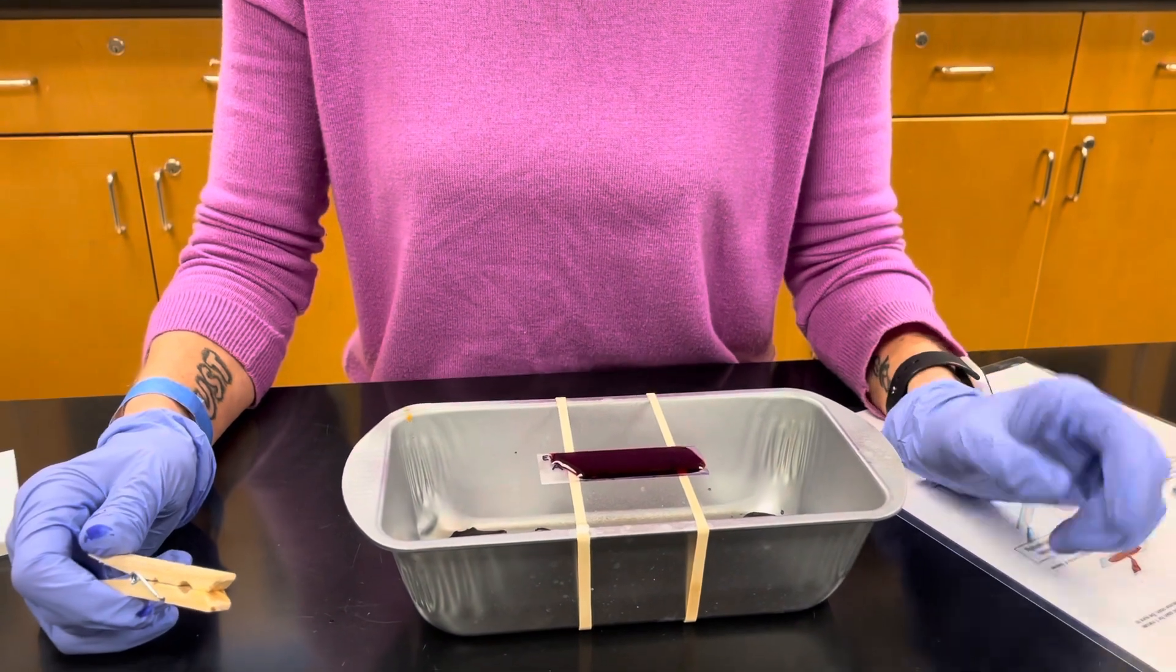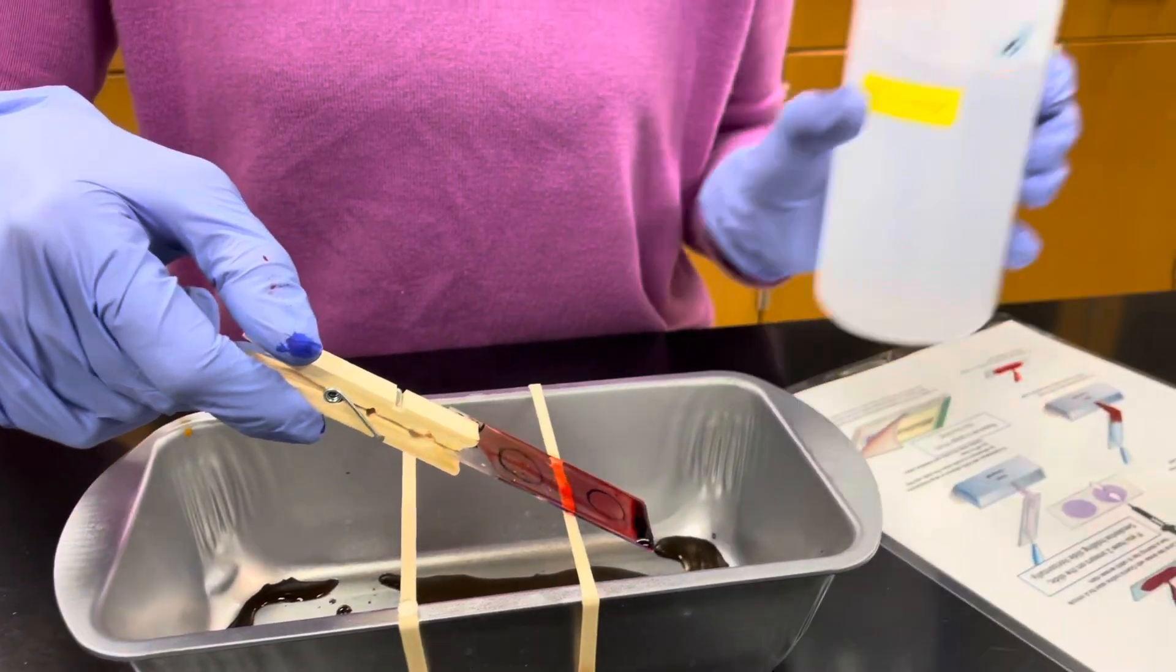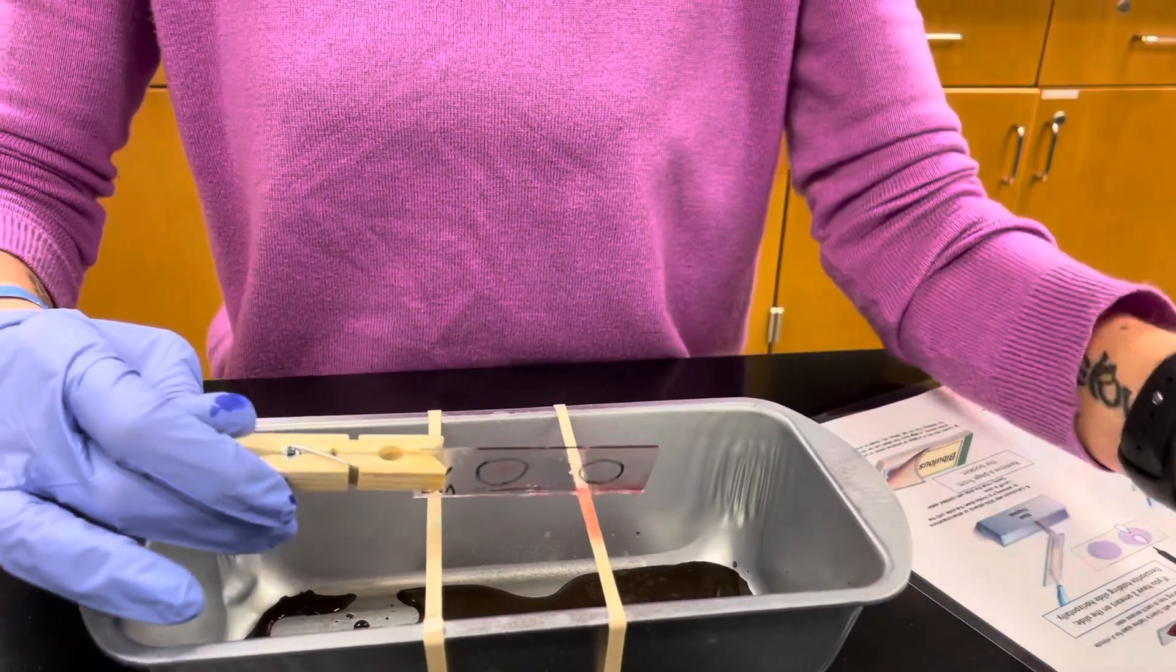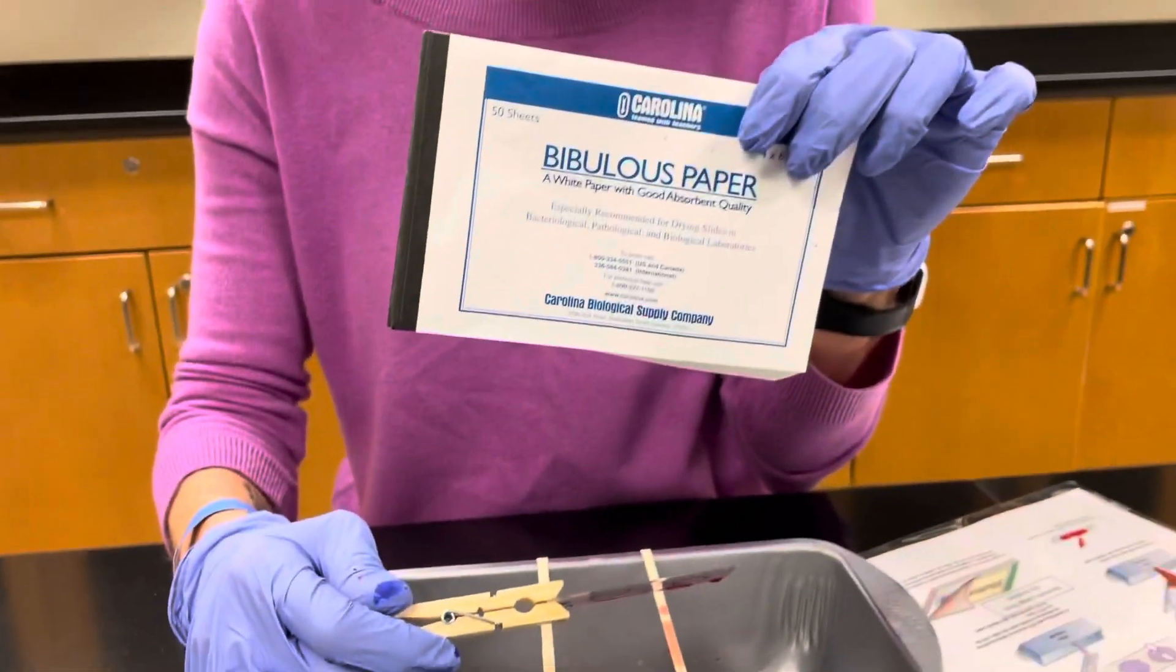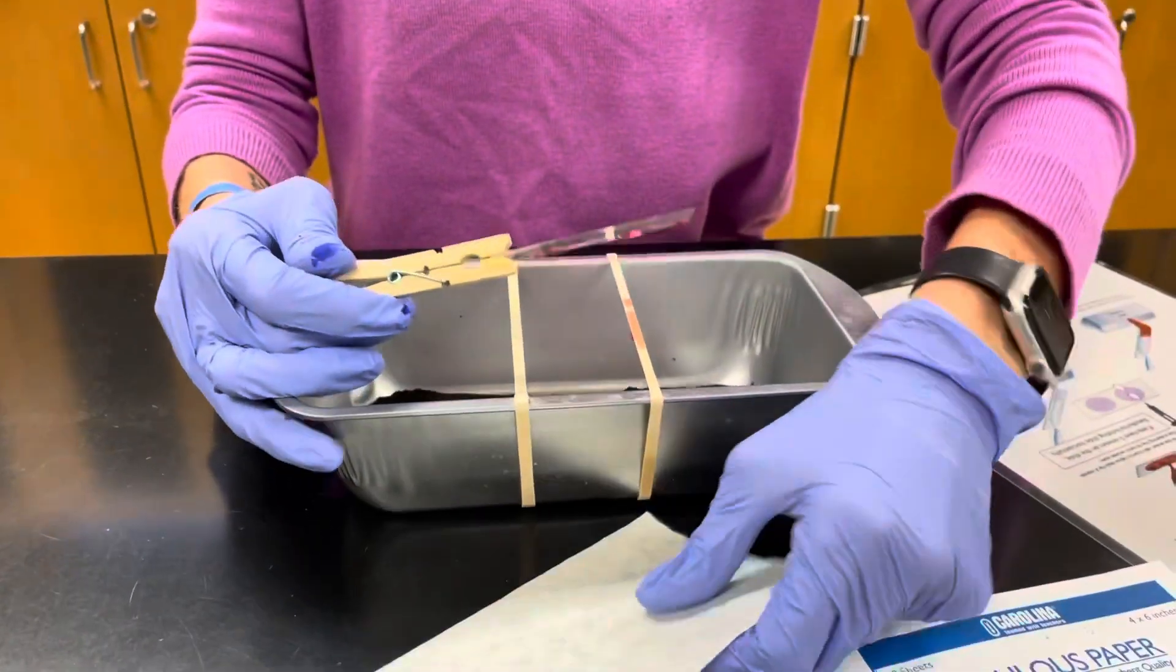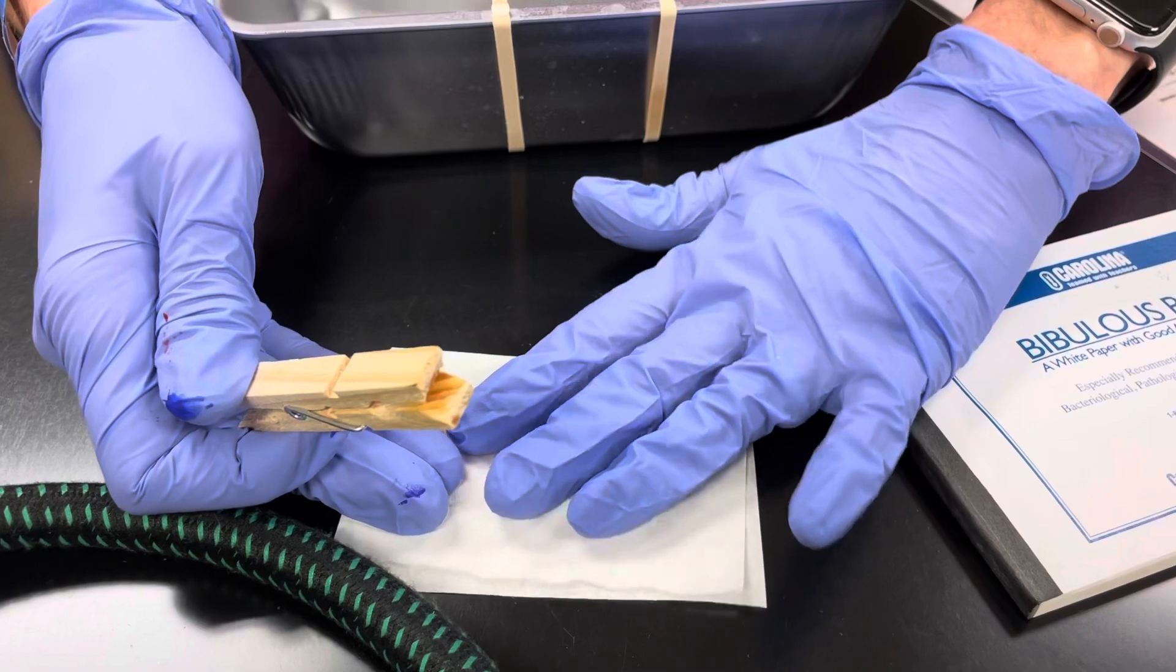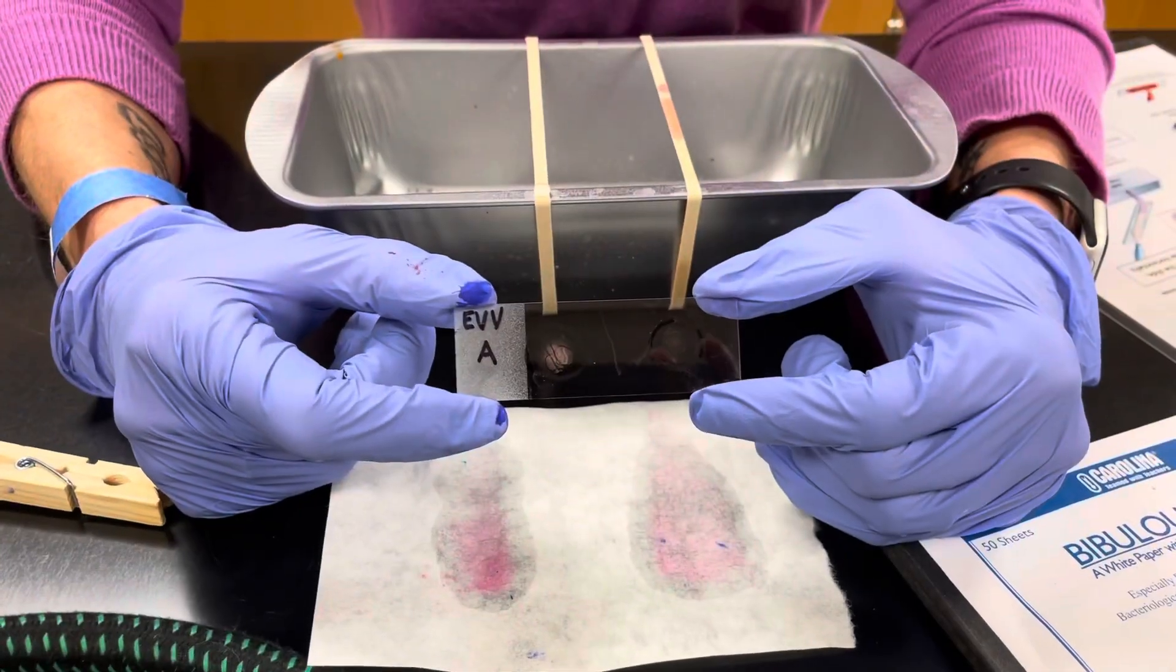The last thing you need to do is rinse off your secondary counter stain, the safranin, and you rinse it off using water just gently. Tap the excess and then we're going to blot it with bibulous paper. So go ahead and just remove one sheet. Place your slide on the bibulous paper and then just blot it gently to dry. Once your slide is dry, it's ready to view.